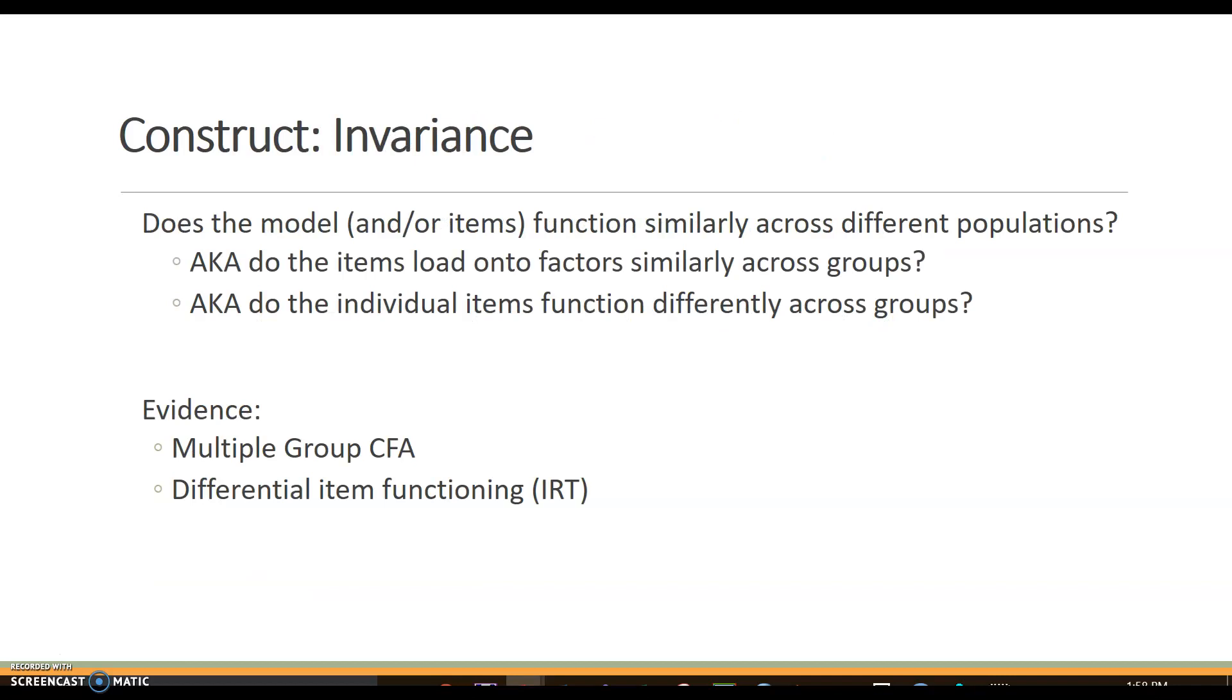The third aspect of construct validity is invariance. And this is making sure that the model does not vary by groups. So there's not something about a participant that would influence the way that they're responding on a measure. We talk about this really as a model and potentially as items. And is it functioning the same across different populations?